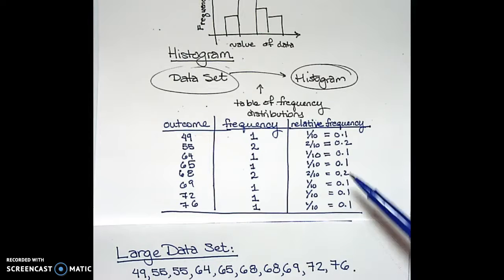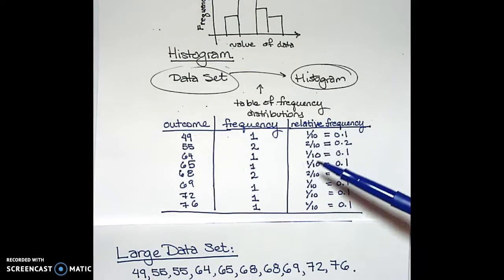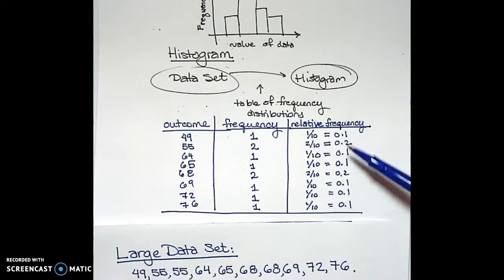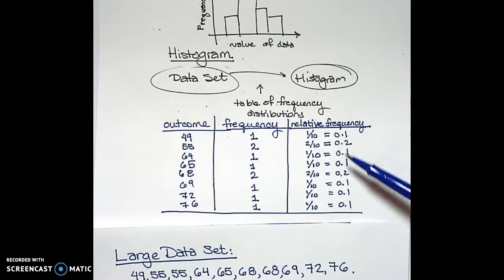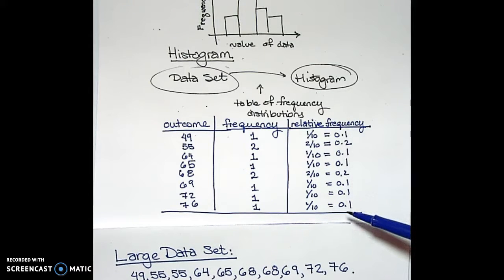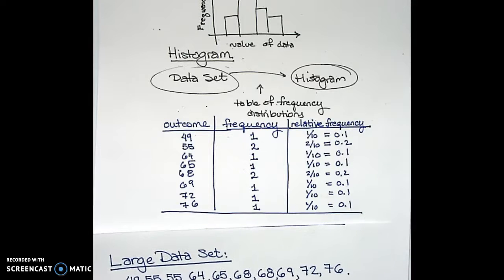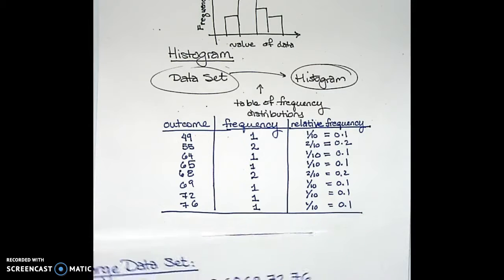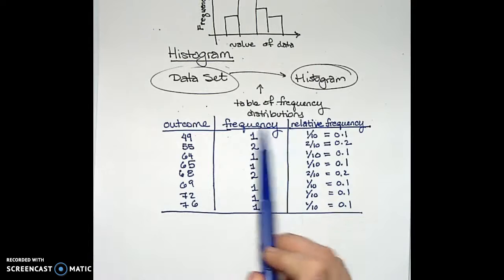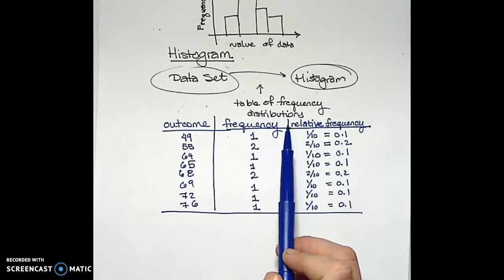One way to check whether the column of relative frequencies is correct is to add up all of the relative frequencies and make sure the total is one. Now that we have the table of frequency distributions, we're able to use this information to create a frequency histogram.